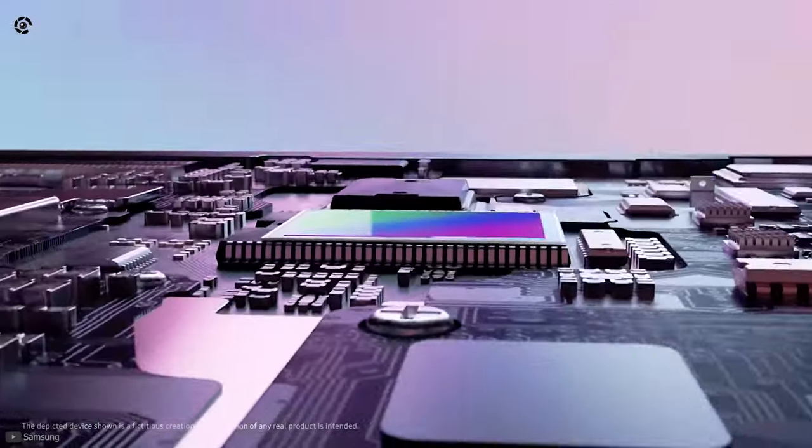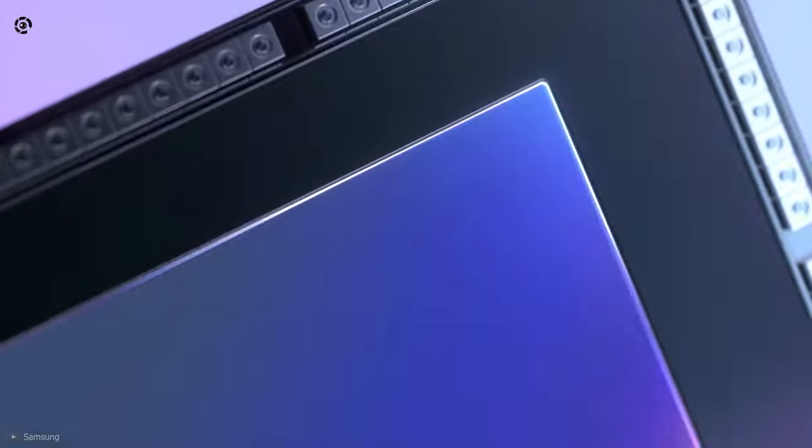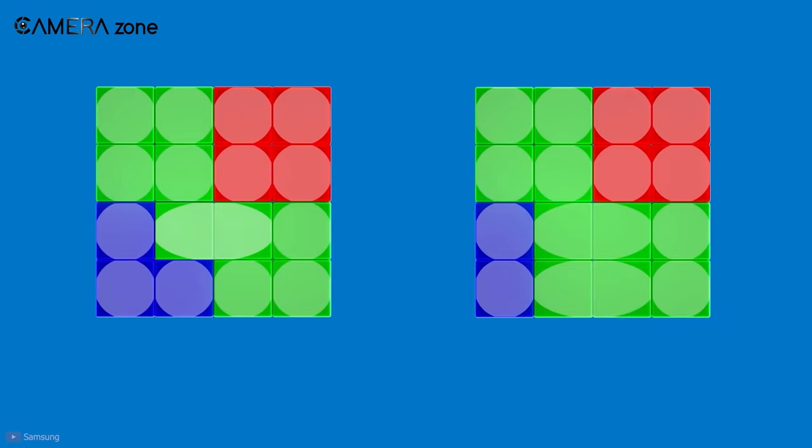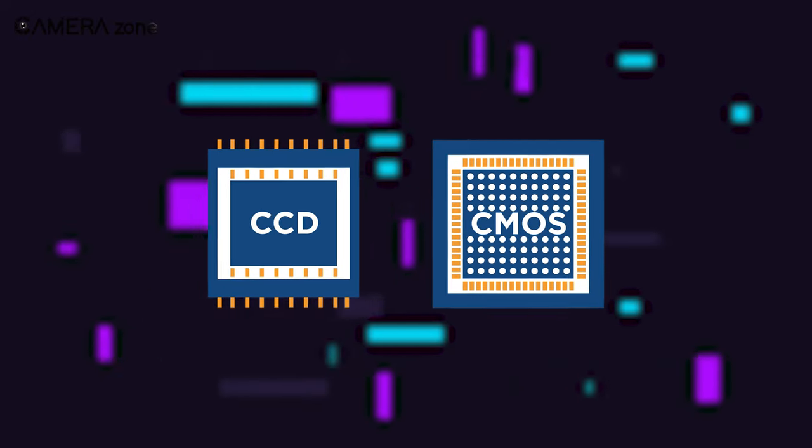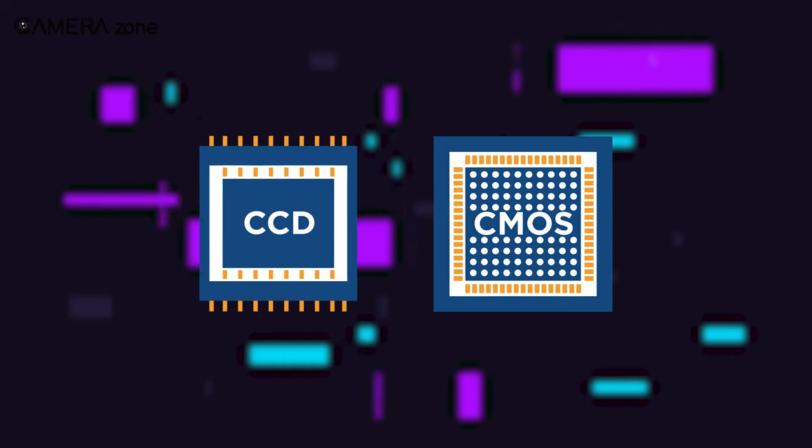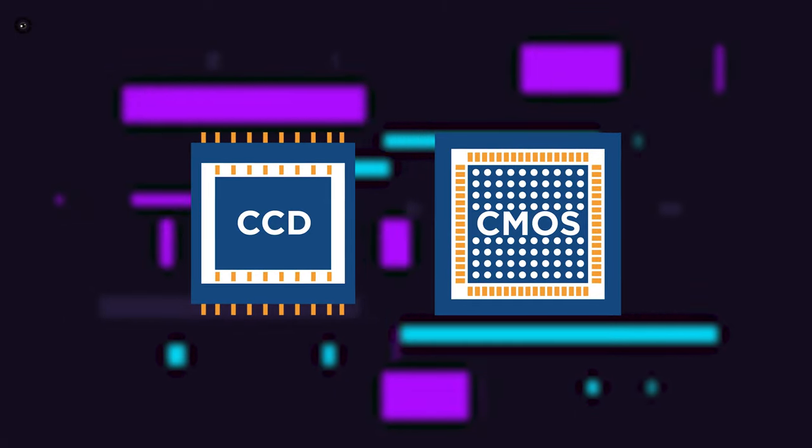That's how our eyes work. The same principle is followed in a camera image sensor, but electronically. There are two types of sensors that are commonly used these days: one is the charge-coupled device or CCD, and the other one is the complementary metal-oxide semiconductor or CMOS in short.